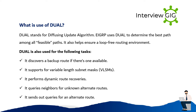DUAL is also used for the following tasks: it discovers a backup route if one is available, it supports variable-length subnet masks, it performs dynamic route recoveries, it queries neighbors for unknown alternate routes, and it sends out queries for an alternate route.